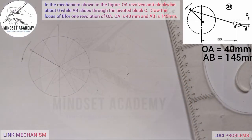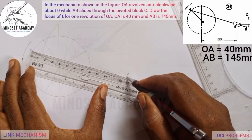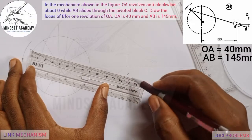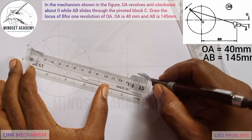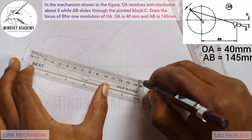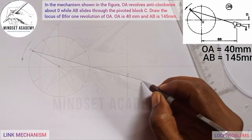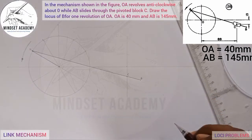Every line AB will pass through point C. Draw a line AB, and we are given AB equal to 145 millimeters. Take the ruler and draw a line from point A, passing through C because it is pivoted, measuring 145 millimeters. The point where it stops will be point B.